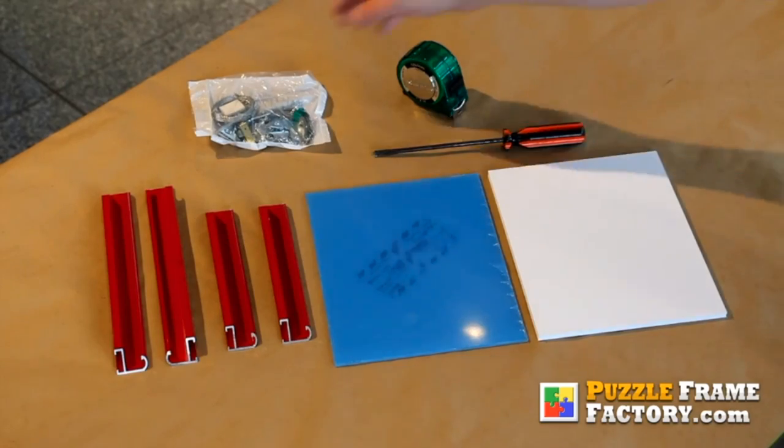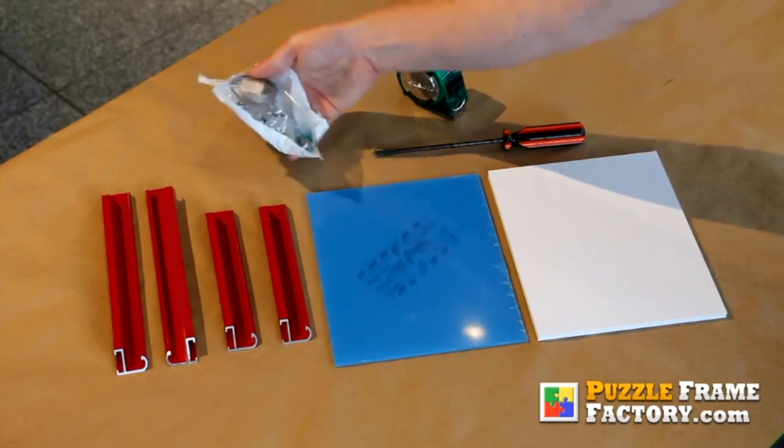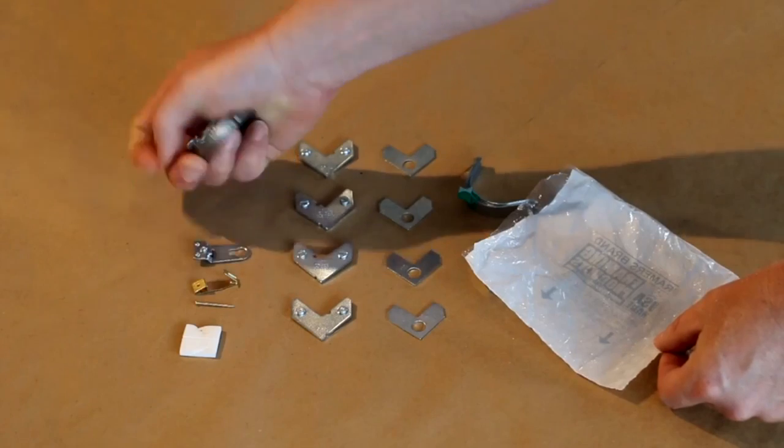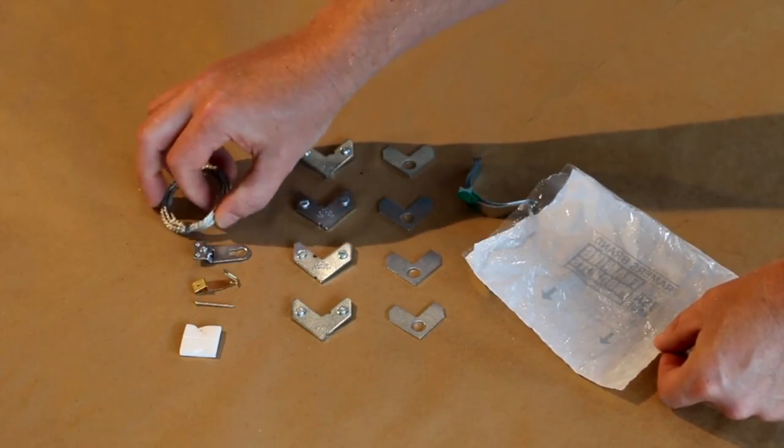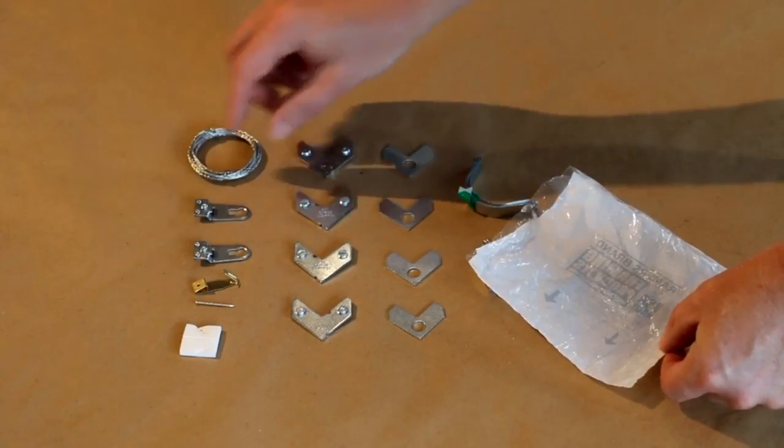We send all the frame parts needed, including the frame rails, lens cover, backing, and hardware pack. Inside the hardware pack, you have the corner hardware, spring clips, hanging wire, and wall bumpers.